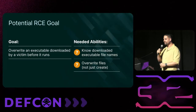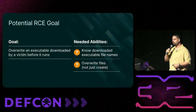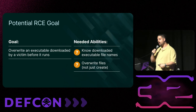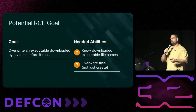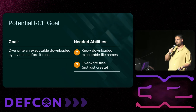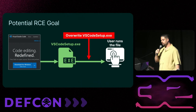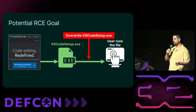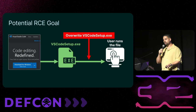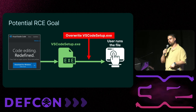This led us to an idea: what if we could overwrite an executable that was downloaded into the downloads folder before it runs? If being a man-in-the-middle could help us know which executable files are downloaded by the browser, and if we could overwrite them using our abilities, this would lead to an RCE. The simplest example: a victim downloads the VS Code installer, we overwrite it right after it's downloaded, and the victim runs our executable instead.